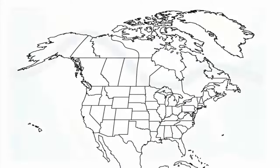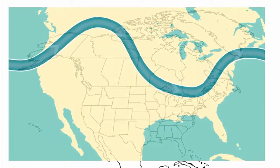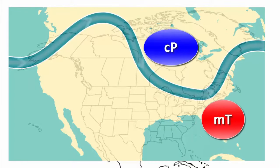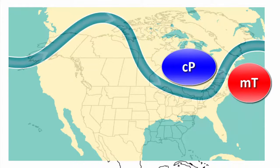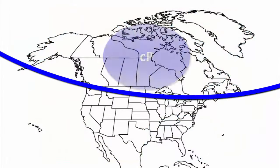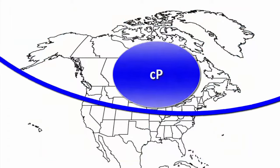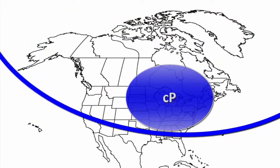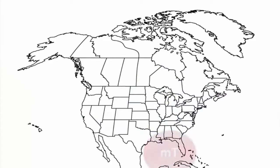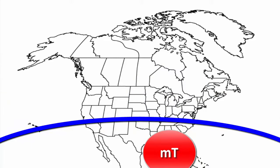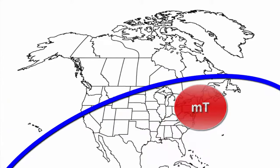The jet stream is always moving from west to east and sometimes it bends towards the north or towards the south, pushing air masses along with it. If the jet stream bends towards the south, it's going to drag continental polar air along with it, and we would expect our weather to become colder and probably drier. On the flip side, if the jet stream bends towards the north, it might drag maritime tropical air up from the Gulf of Mexico, and we would expect the temperature to go up and it would get a lot more humid as well.